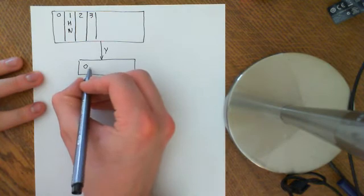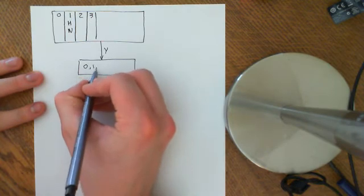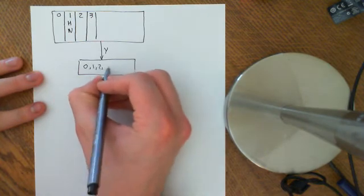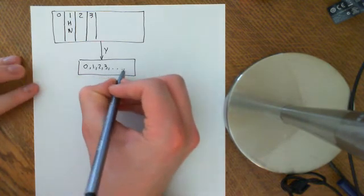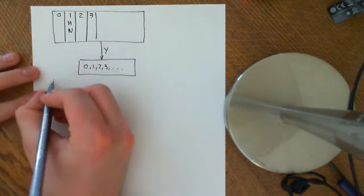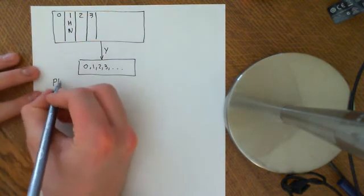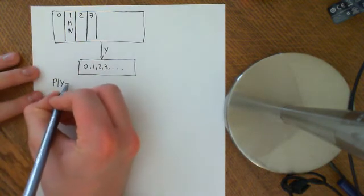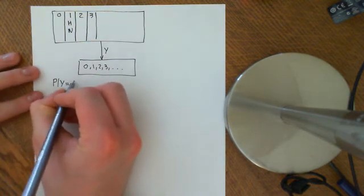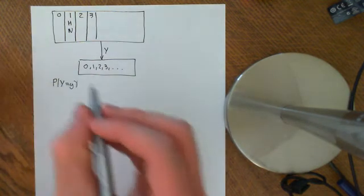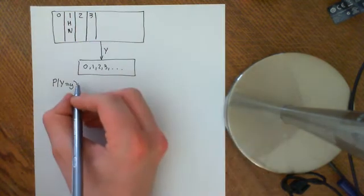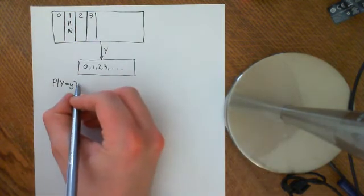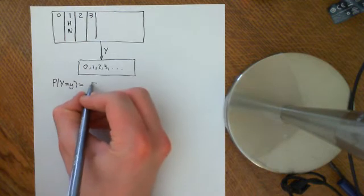We had a random variable, big Y, defined on here, which was ascribing to each outcome the number of eggs that the chicken made that did not hatch. So this is 0, 1, 2, 3, etc. We want to work out what is the probability that big Y is equal to some little y. The way we're going to do this is, again, we're going to use the law of total probability.